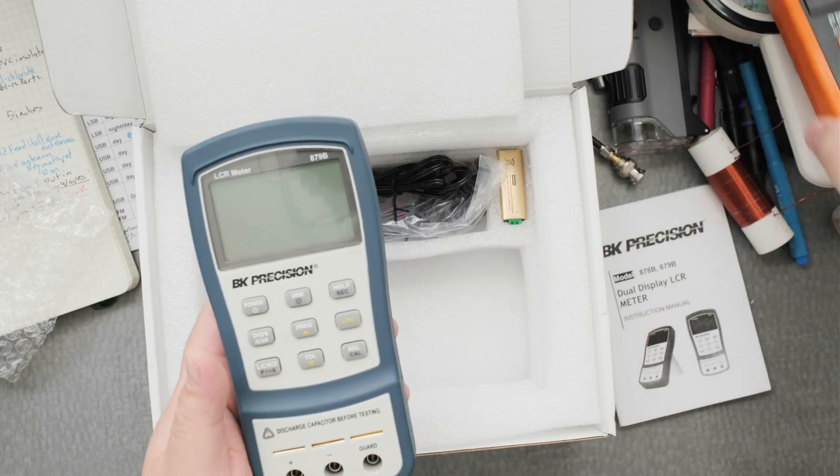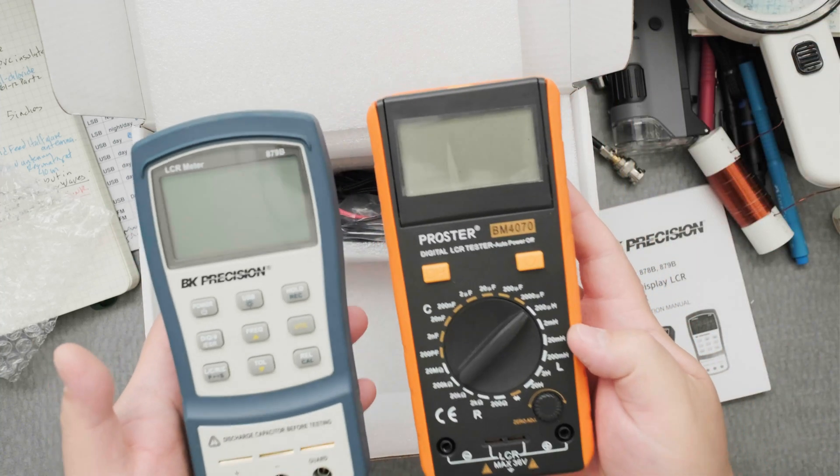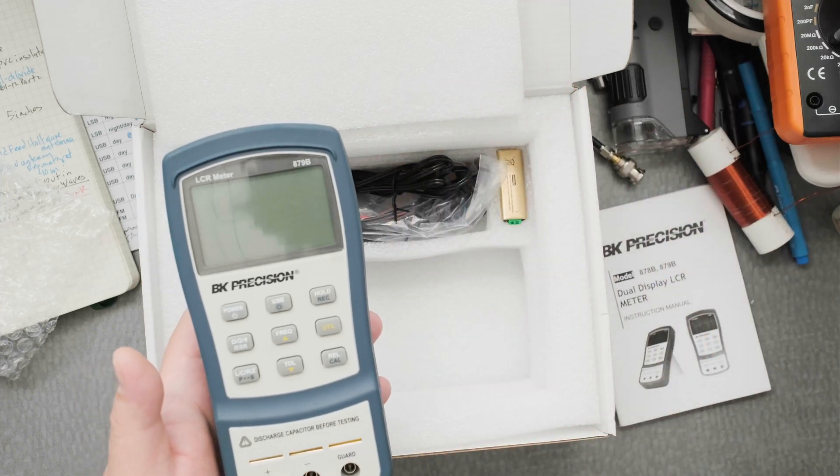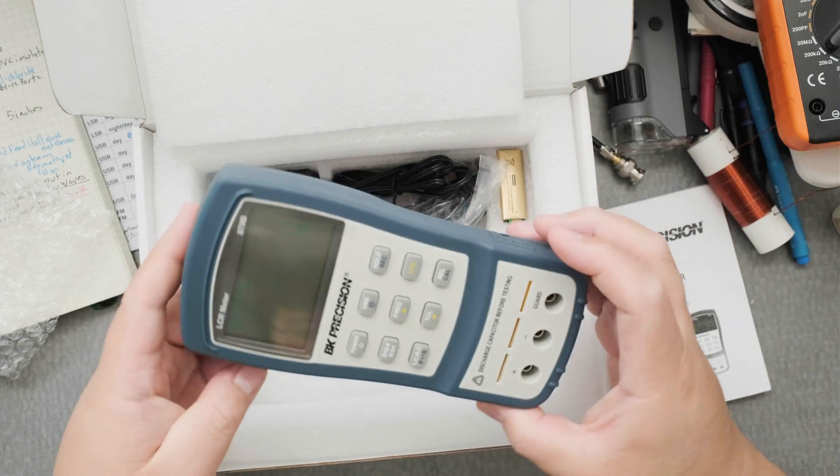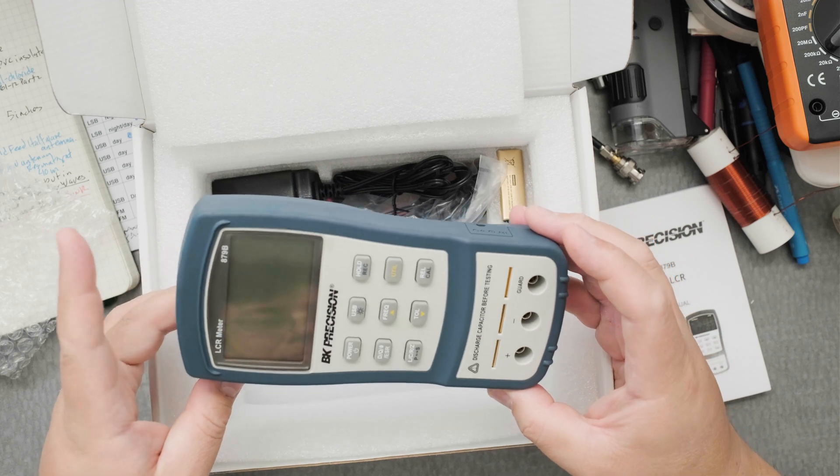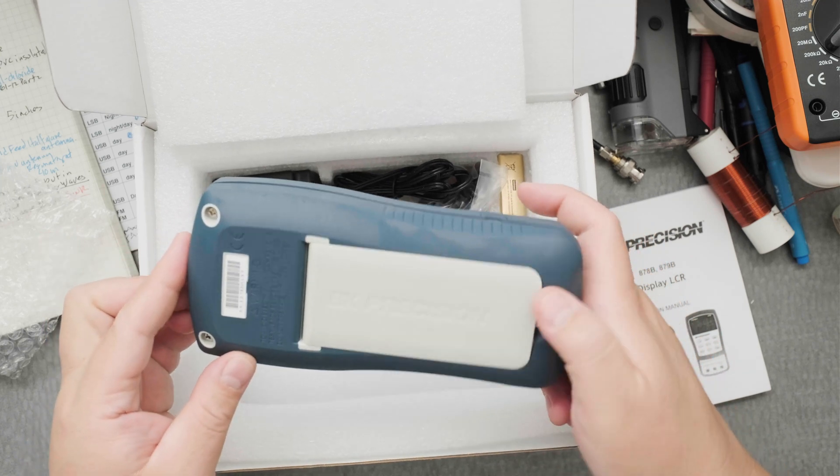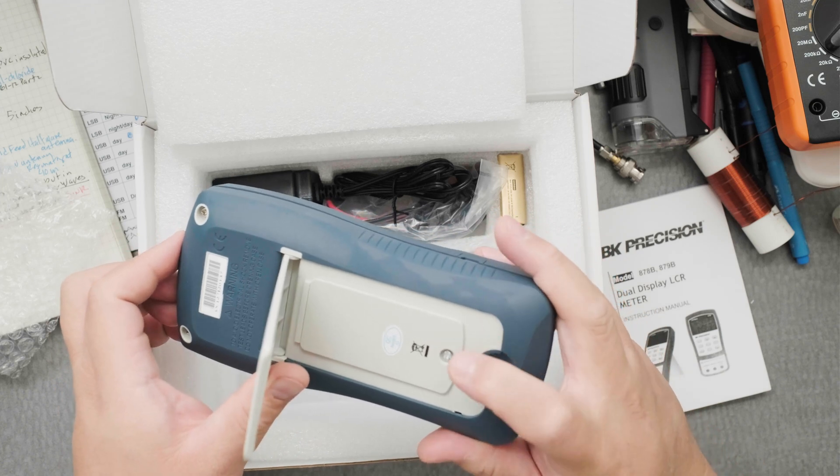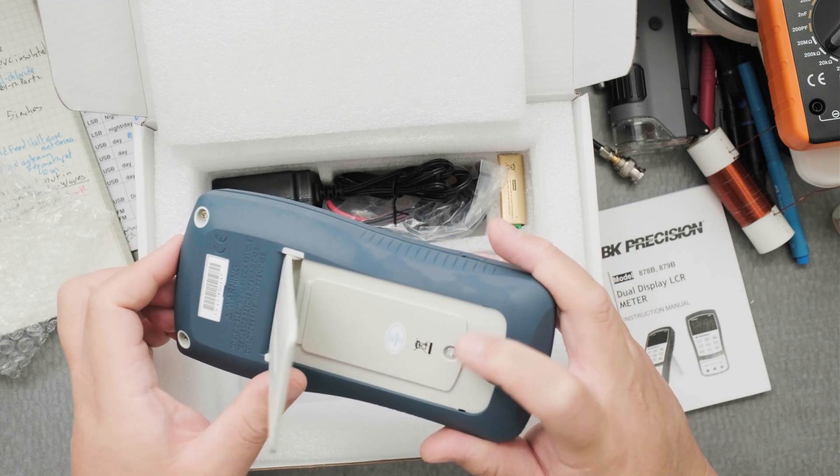It doesn't weigh too much. The Proster seems to weigh a little bit more, but it doesn't mean anything—might just be plastic. Very nice. It has a nice little kickstand, and I know that you unscrew here for the battery. That's really nice.